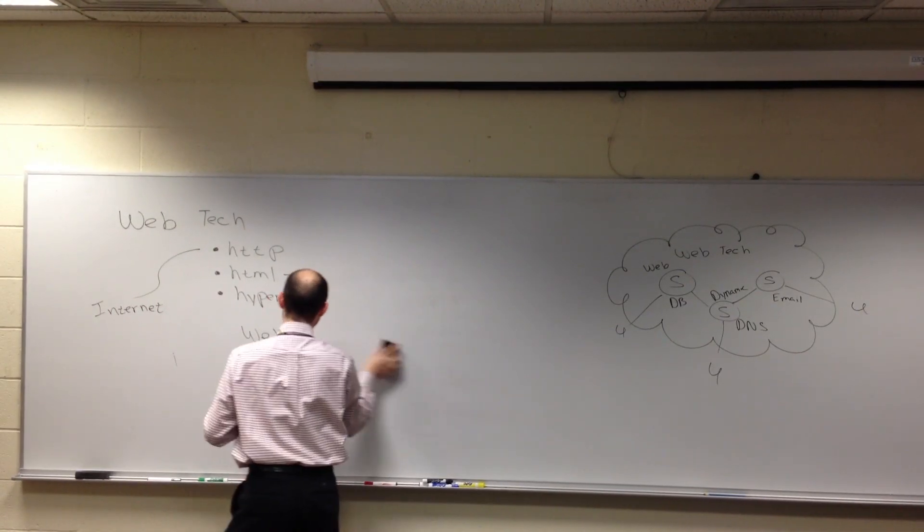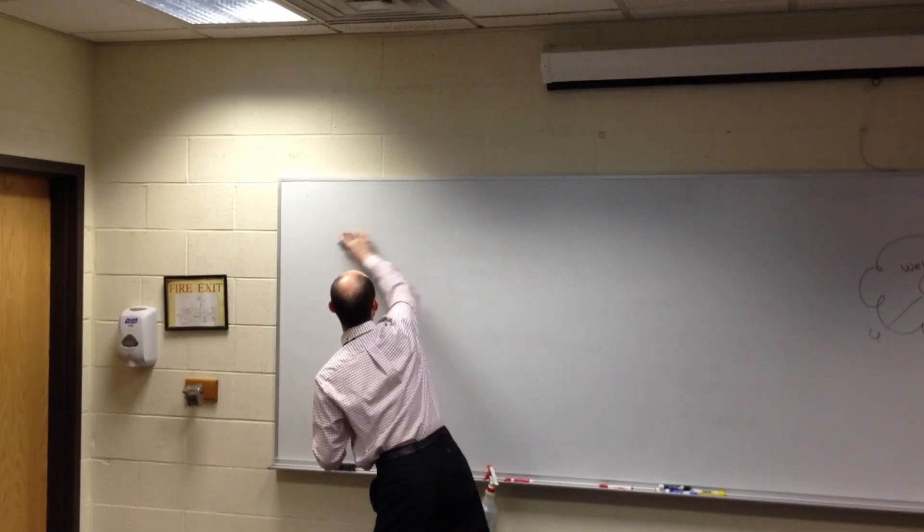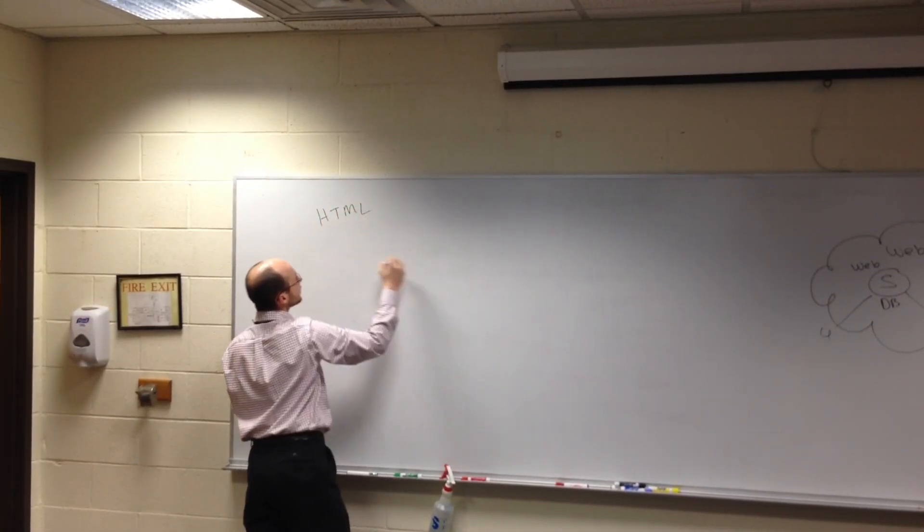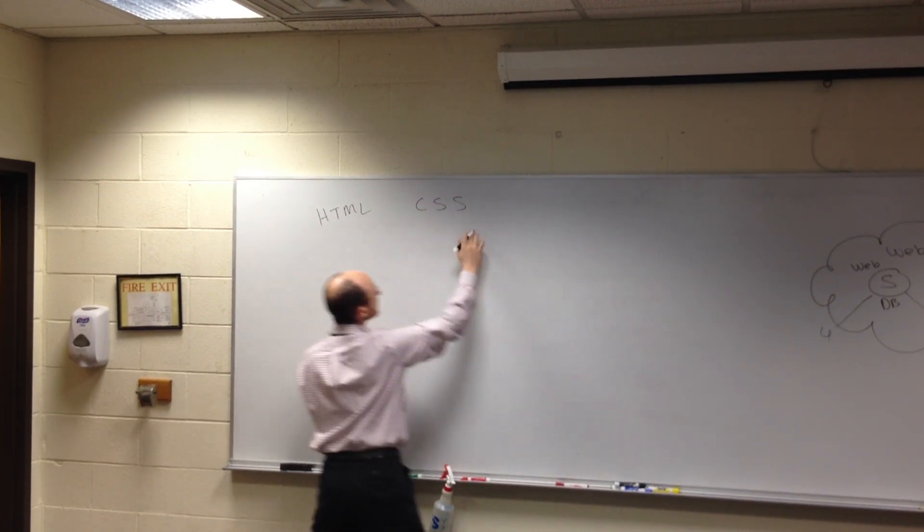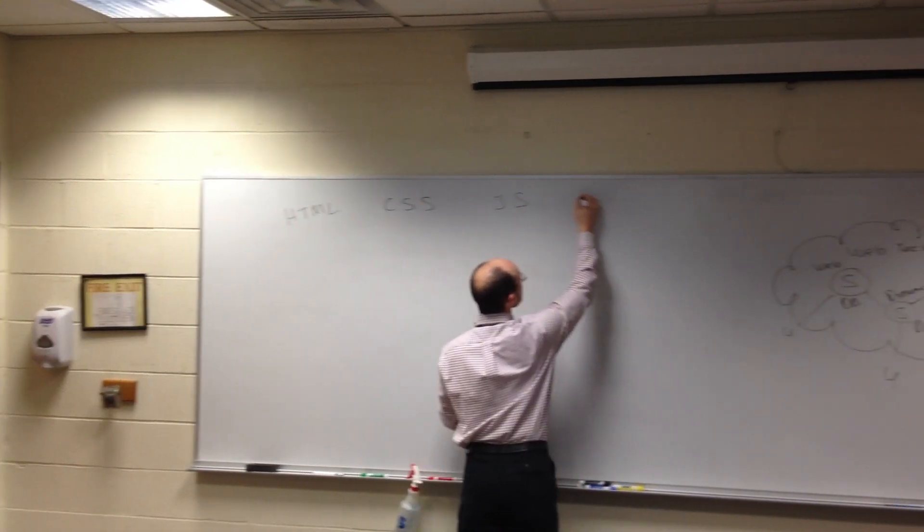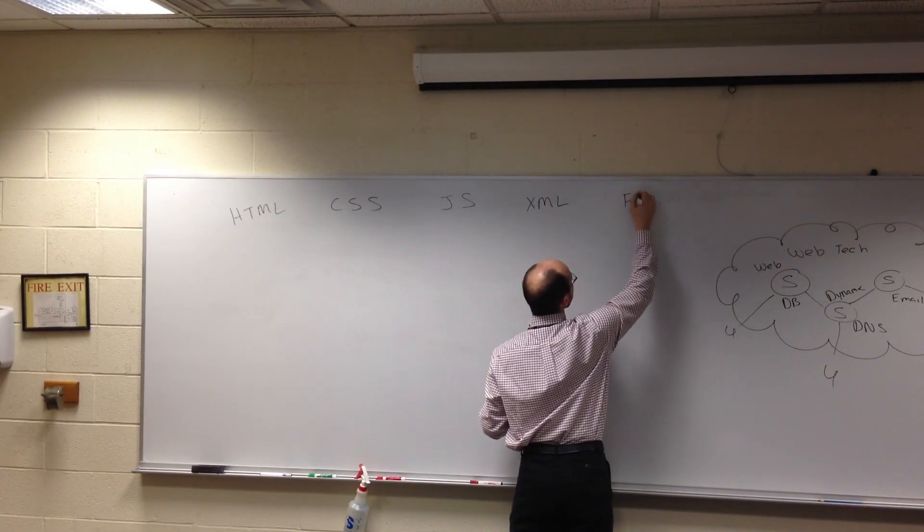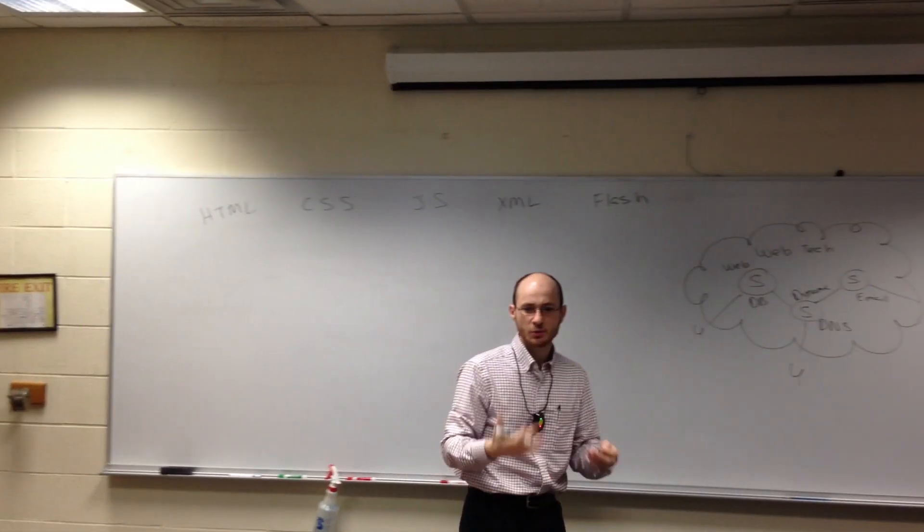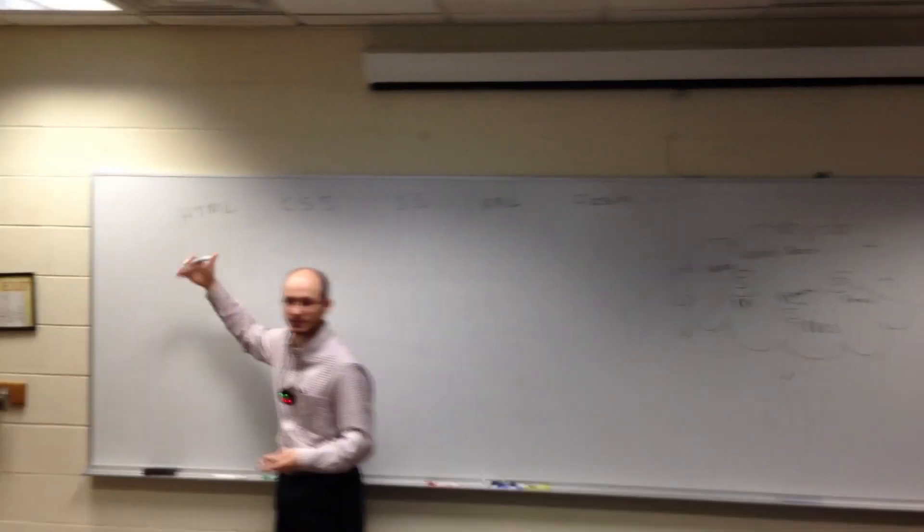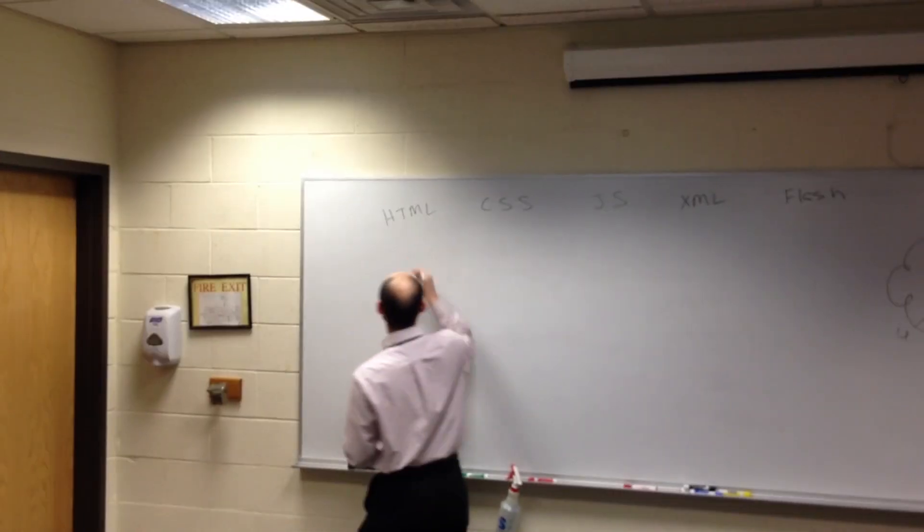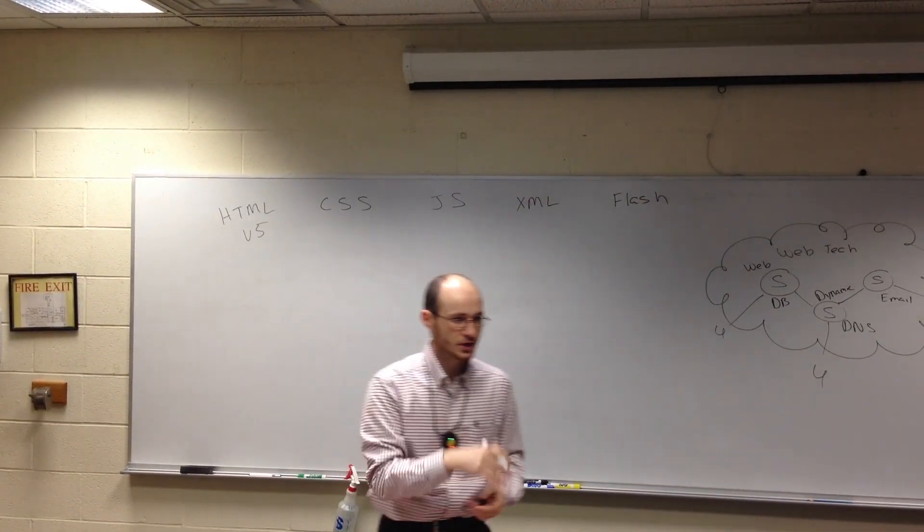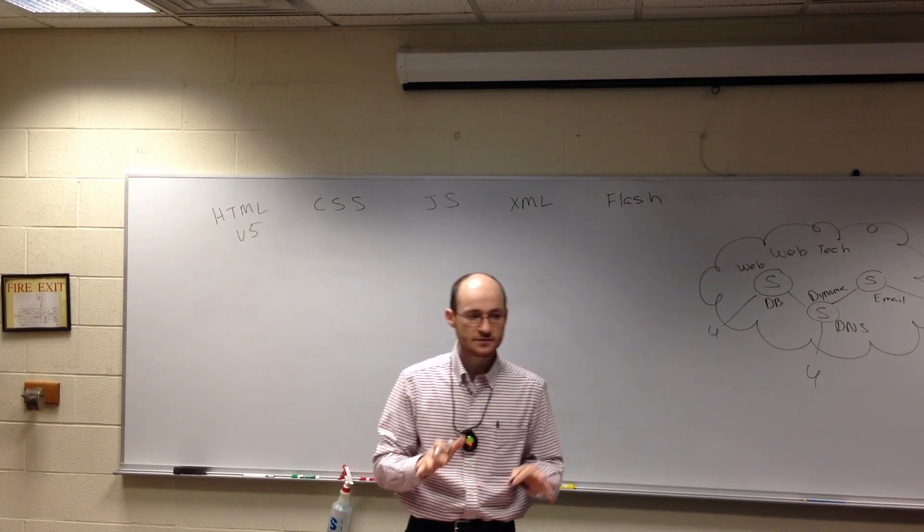Each color will represent a piece of technology. One of them is going to be CSS. Another, obviously, is going to be HTML. You guys should expect HTML to be the very first piece of technology coming across the top. It's going to say HTML, CSS. It might even say JS. Eventually you'll see XML. You might even see Flash. The list goes on and on. These are the web technologies that I want to talk about.